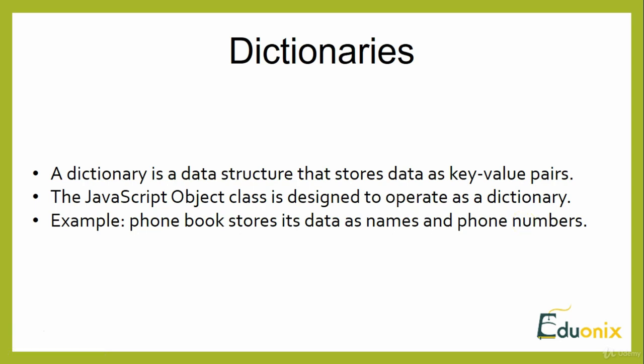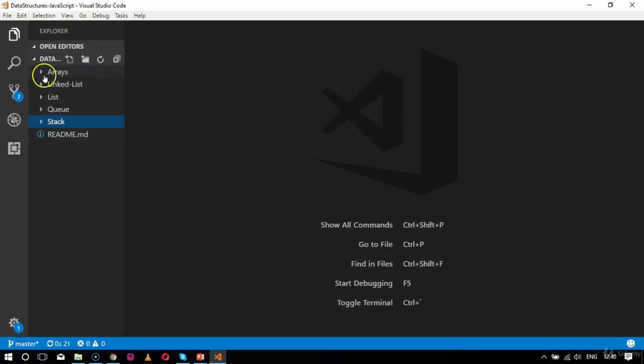Let's start with coding for our dictionary. First, we will create an HTML file and then a JavaScript file, just like we did in our previous data structures, and access the key-value pairs in the dictionary. Let's go to our code base where we will create a JavaScript object and accordingly write the code for the dictionary.